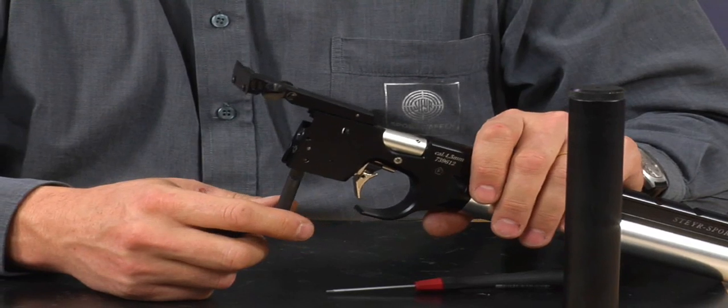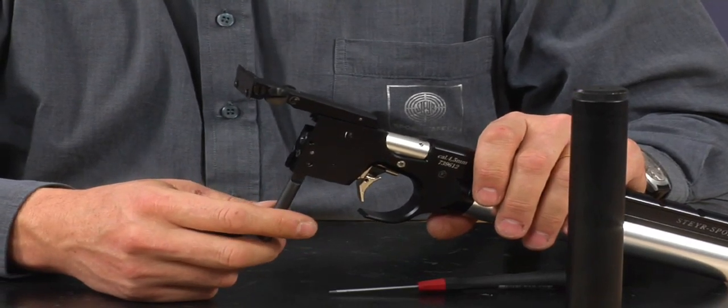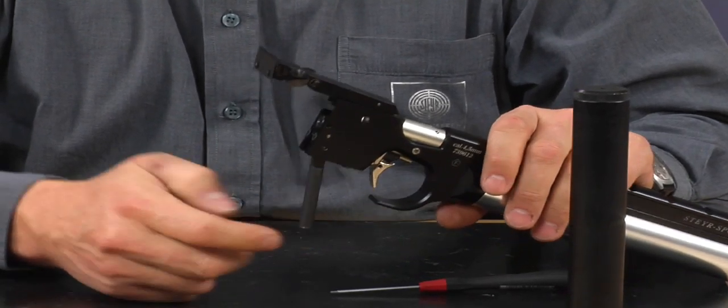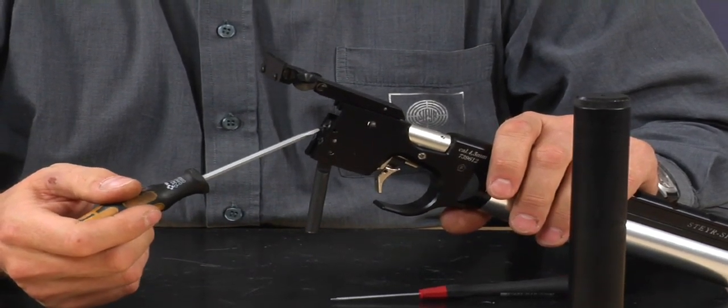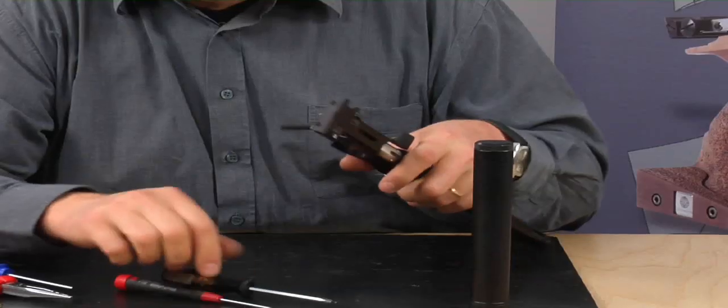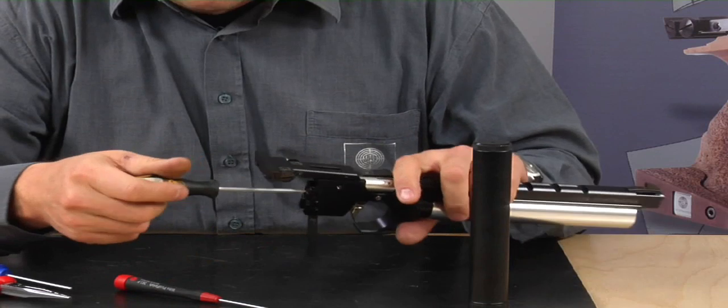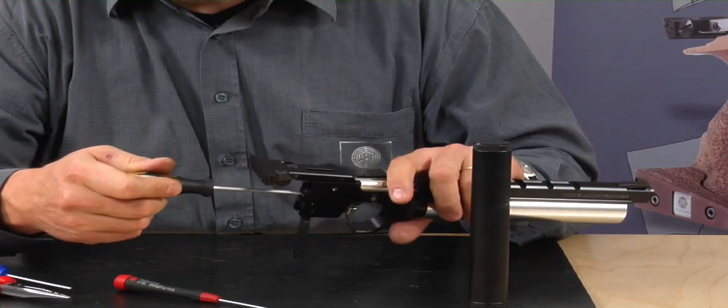By turning the velocity screw clockwise, the velocity increases. Anti-clockwise, it reduces. After the adjustment of the velocity, the velocity screw is held in place by this screw on the side. During competition and normal use, it is not possible for the velocity screw to become loose.